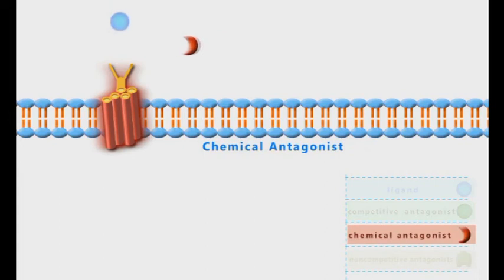Chemical antagonists bind to the full agonists anywhere in the body before reaching their receptors, and they inhibit their biological effects.